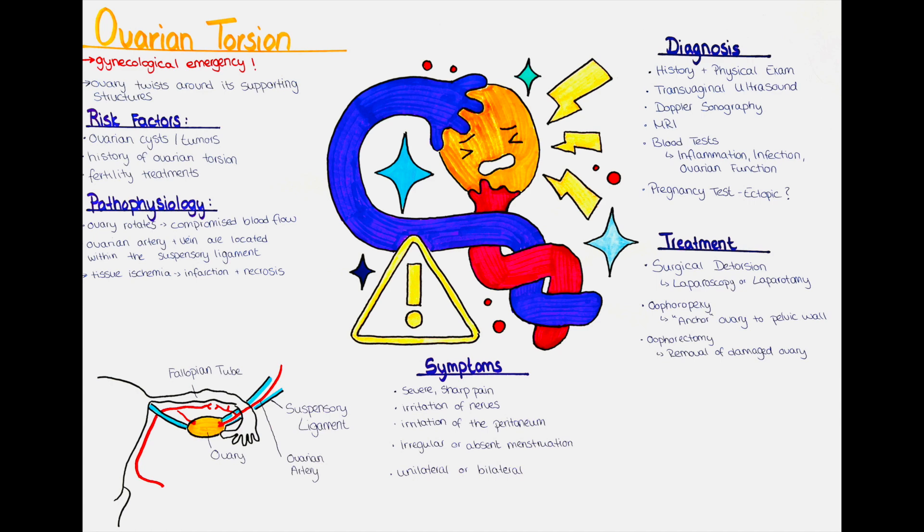If the blood supply remains compromised for an extended period, infarction may occur. Infarction refers to the death of tissue due to prolonged lack of blood supply. Infarction of the ovary can result in irreversible damage to the affected tissue.